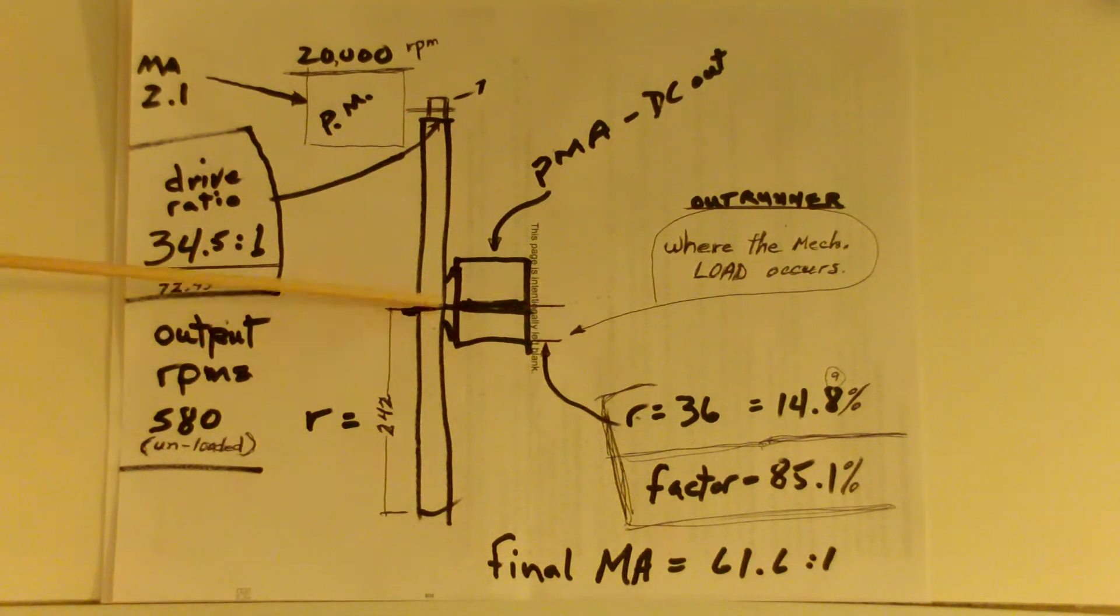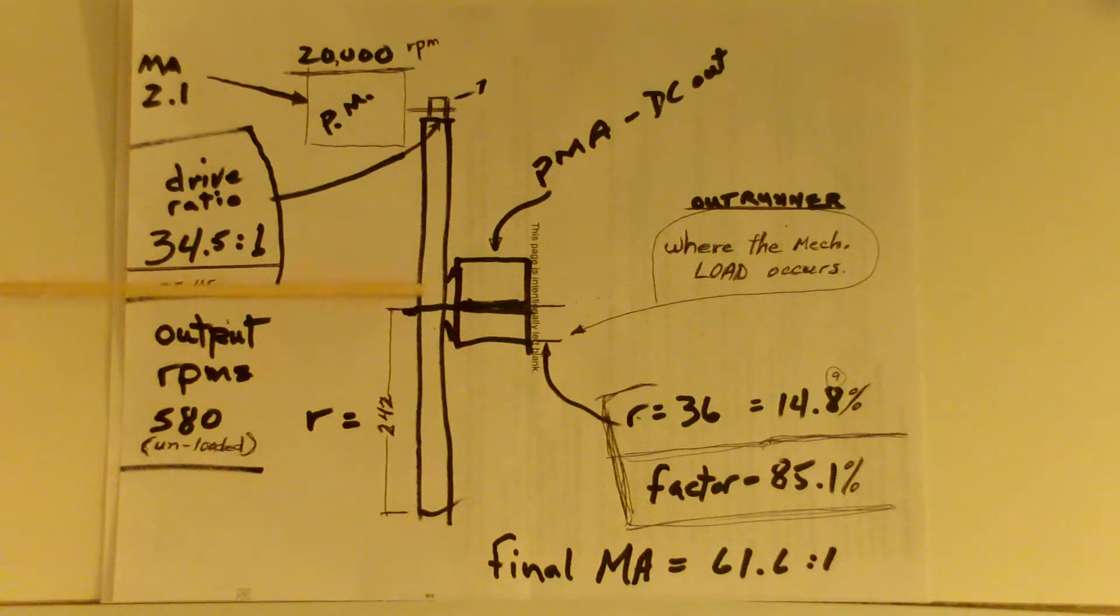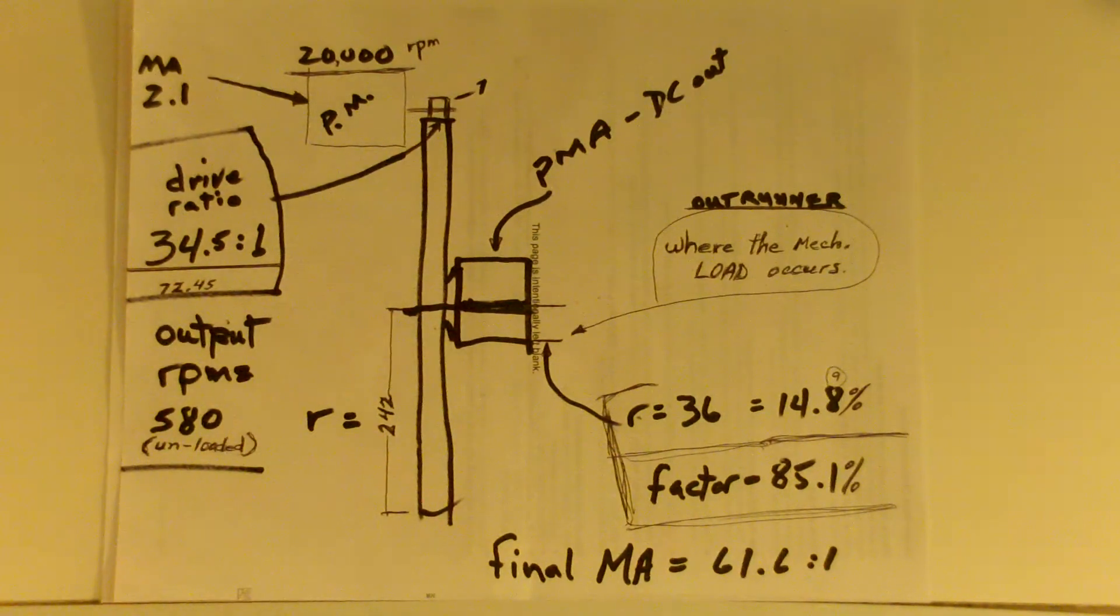I found online a physically smaller PMA for lawn tractors. However, it has an outrunner configuration though, like an outrunner brushless motor. So that the load, where the power is being generated, is happening at this radius. That effectively reduces the advantage that I've got here by that much. So it is reduced to 85.1% of the total, according to my math.